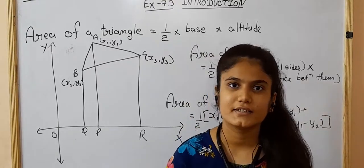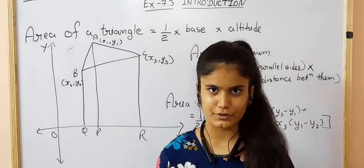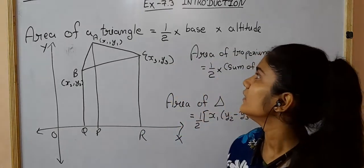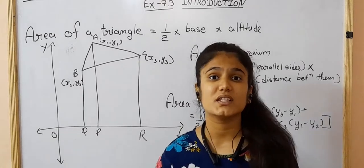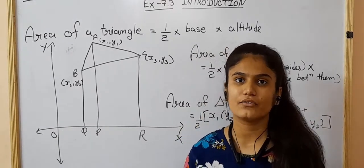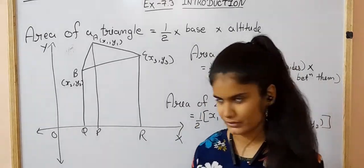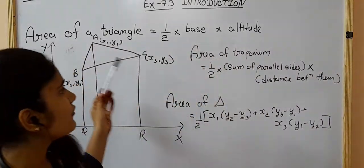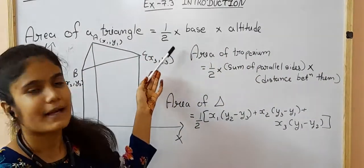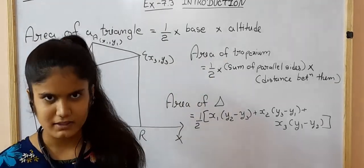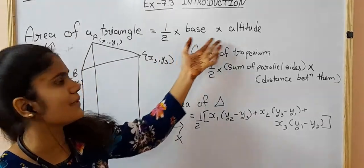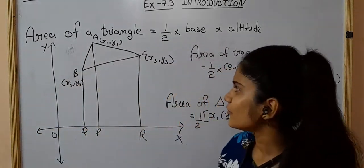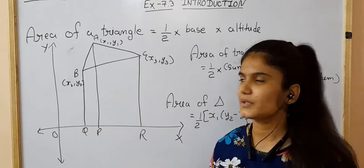Hello, we are starting exercise 7.3 today, but before that, in the introduction, we will learn the area of a triangle using coordinate geometry. The simple formula is: area of triangle equals 1/2 into base into altitude. As we have learned earlier, half into base into altitude gives the area of the triangle. But for coordinate geometry, it is something different.